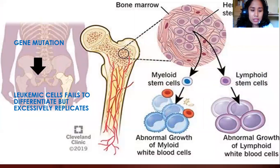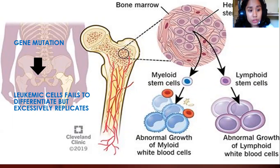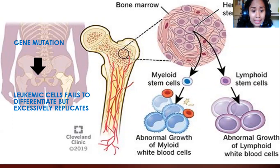Looking at the diagram, we have a gene mutation — something wrong with the chromosome. Examples include translocation (T), inversion (INV), and deletion (DEL) in a certain chromosome. This gene mutation creates leukemic cells, or cancer cells. These cancer cells fail to differentiate — they do not have the capacity to mature from an immature cell into a mature cell.